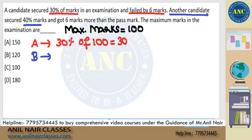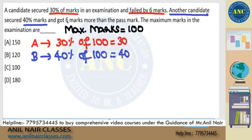Next, another candidate — suppose my friend is the second candidate. He secured 40% of marks. 40% of 100 is 40 marks. And my friend got 6 marks more than the passing marks.